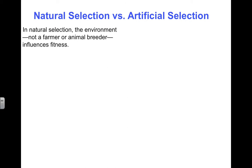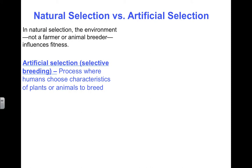Natural selection occurs in the environment on its own — an organism does not have control of this process, since they are born with or without these special traits. Artificial selection, or selective breeding, is different. It's a process where humans choose characteristics of plants, animals, or other organisms, taking parents with the desired traits and crossing or mating them to produce offspring.